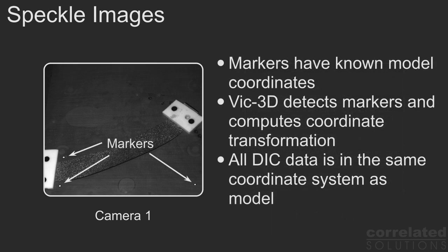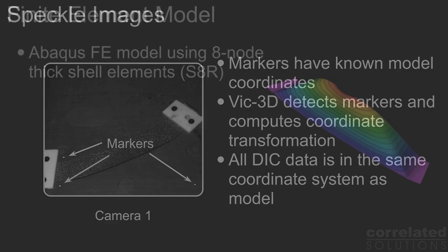High contrast markers at known positions on the base plate are used for registering the coordinate systems. VIC-3D computes the 3D coordinates of the markers and automatically determines the DIC to FE transformation matrix.